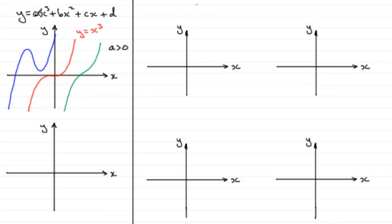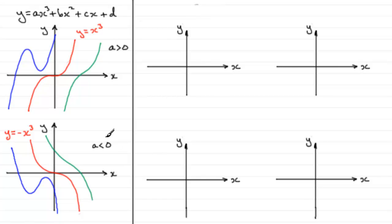But what happens if a is negative? Well, putting a negative in front of the x cubed causes a reflection of these graphs in the x-axis. So you can expect to get graphs that look something like this when a is negative. One such graph is y equals minus x cubed — you'll see it's a reflection of y equals x cubed in the x-axis. This is the family of cubic graphs.